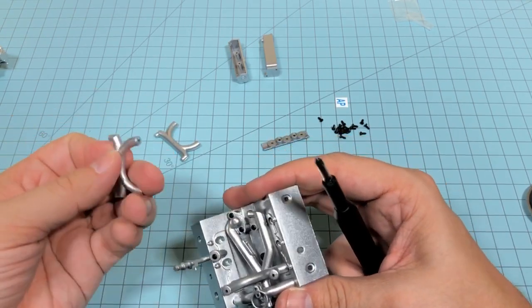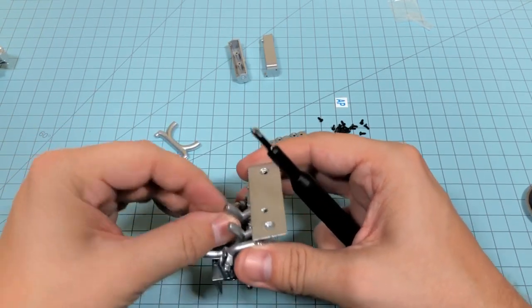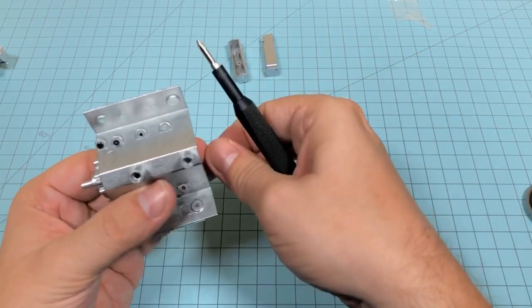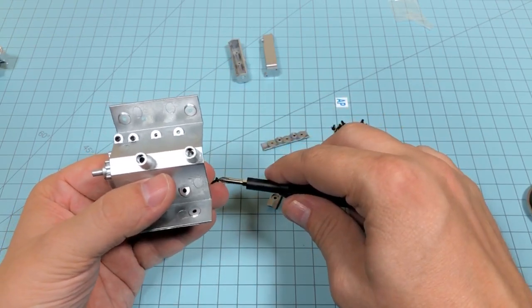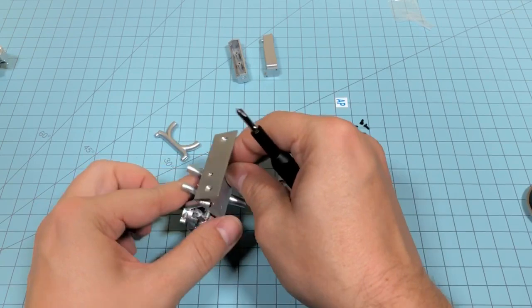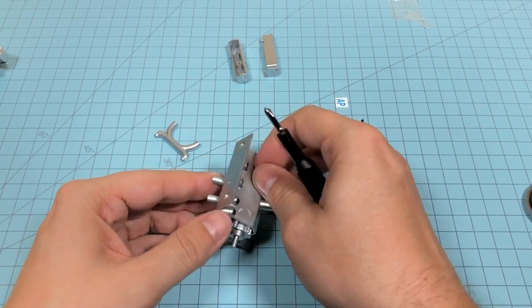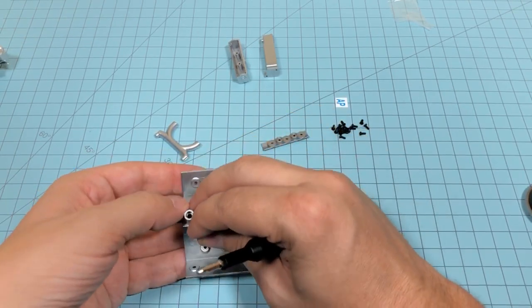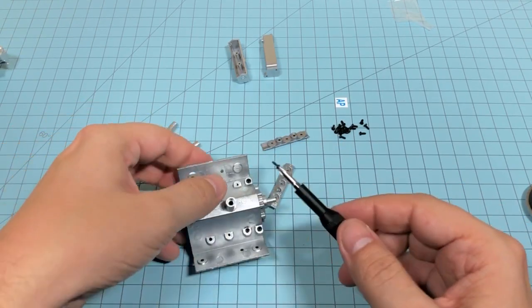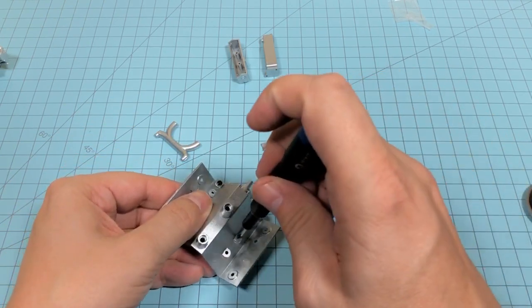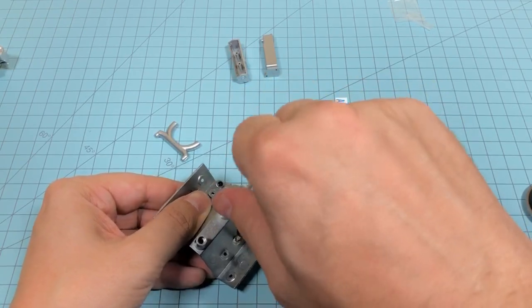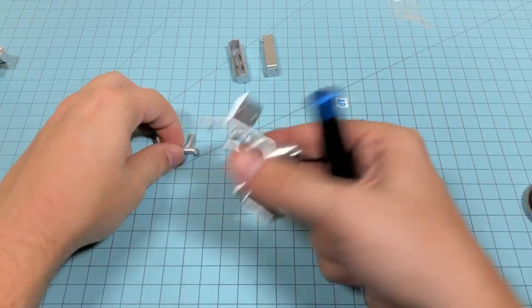Because there being a recess on there, it holds it in really well. So I just need the screw on one side. And that'll be my little jig for... That'll be my little jig to hold everything in place.